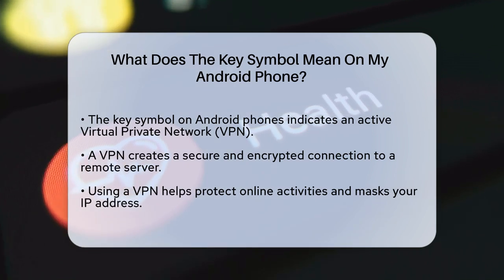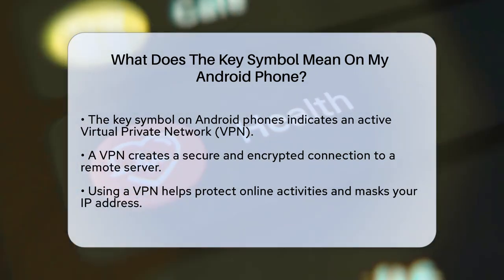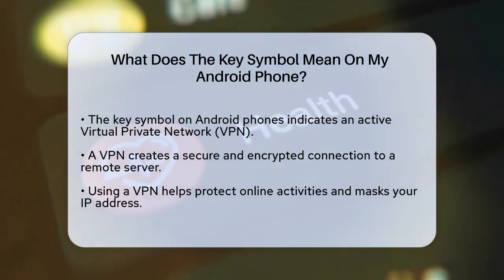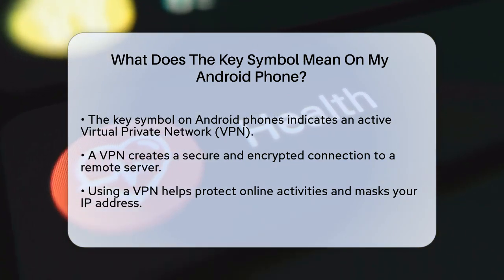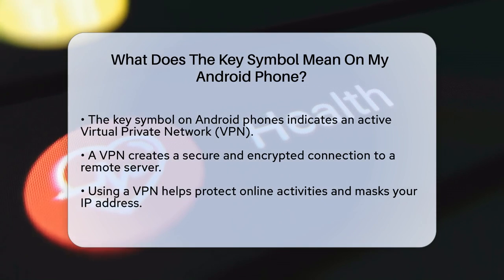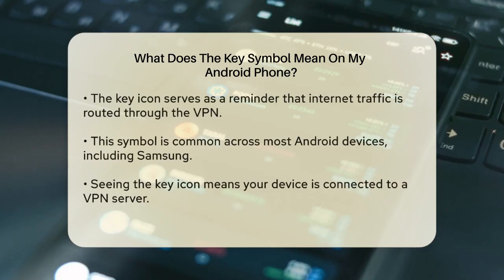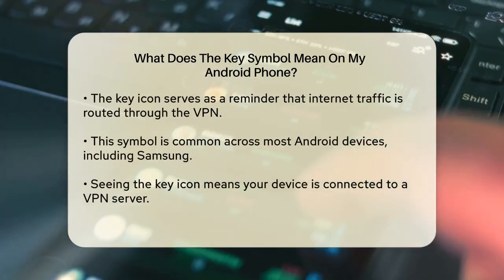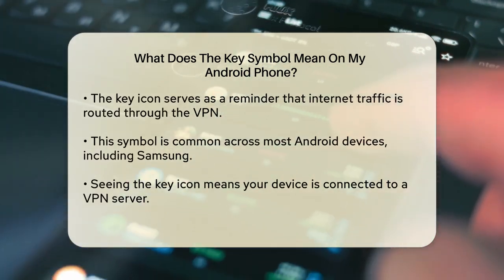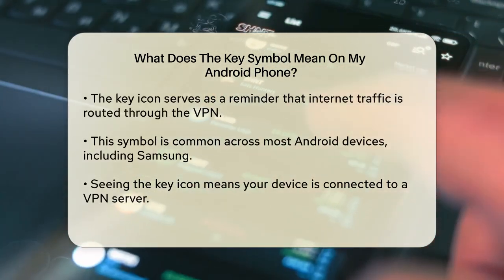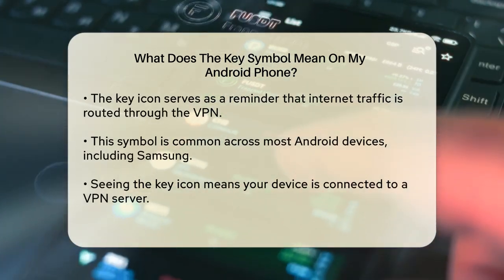The key symbol on your Android phone is actually an indicator that a virtual private network, or VPN, is active on your device. When you enable a VPN, it creates a secure and encrypted connection to a remote server. This helps protect your online activities and masks your IP address, which is great for maintaining privacy and security online.